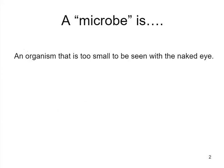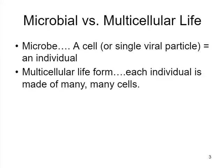A microbe can be defined as an organism that is too small to be seen with the naked eye. If you're new to microbiology, you might be used to thinking about biology from the point of view of being a human. A human is an animal, and animals are examples of multicellular life forms, as are plants. In multicellular life forms, each single organism is composed of many, many different cells. In contrast, a microbe consists of a single cell or a single viral particle — that single individual unit makes up an entire individual.